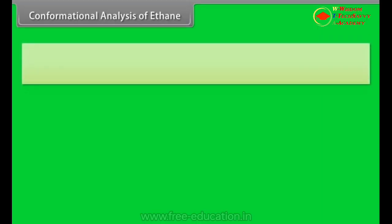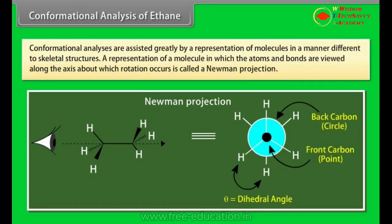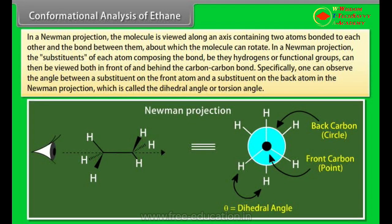Conformational analysis of ethane. Conformational analysis is assisted greatly by a representation of molecules in a manner different to skeletal structure. A representation of a molecule in which the atoms and bonds are viewed along the axis about which rotation occurs is called a Newman projection. In a Newman projection, the molecule is viewed along an axis containing two atoms bonded to each other and the bond between them, about which the molecule can rotate. The substituents of each atom composing the bond, be they hydrogen or functional groups, can then be viewed both in front of and behind the carbon-carbon bond. Specifically, one can observe the angle between a substituent on the front atom and a substituent on the back atom in the Newman projection, which is called the dihedral angle or torsion angle. In ethane specifically, we can imagine two possible extreme conformations.